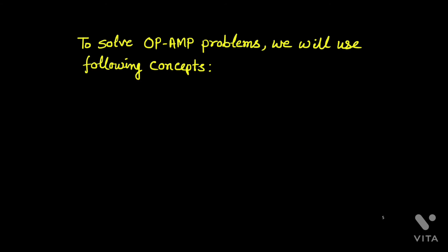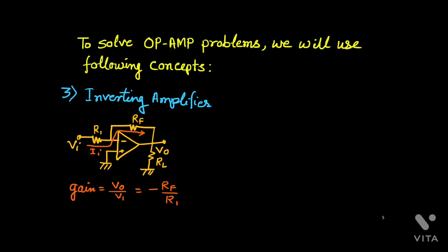The next concept is the inverting amplifier. This is a very simple circuit. When the source Vi is connected through R1 to the inverting terminal, the gain V0/V1 is given by minus Rf/R1. The current flows through R1 and Rf only, because there is no current entering the inverting terminal.